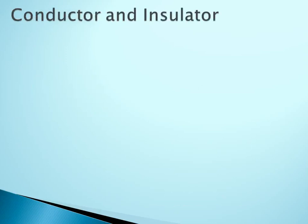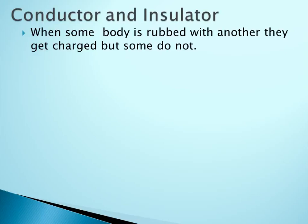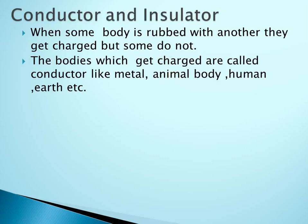There is a new concept: conductor and insulator. When some bodies are rubbed with another body they get charged, but some bodies do not get charged. The bodies which get charged are called conductors. Examples of conductors are metals, animal bodies, humans, earth, etcetera. The other category is called insulators, like wood, nylon, plastic, glass, etcetera.